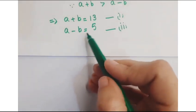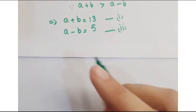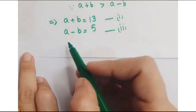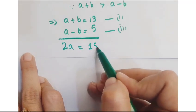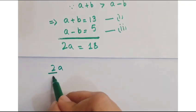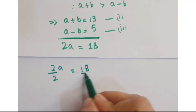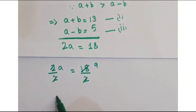Now, we can find the values of a and b by using the elimination method and just add up both these two equations. So you get here 2a is equal to 18. Further, divide by 2 on both sides. This 2 gets cancelled. So we have a is equal to 9.